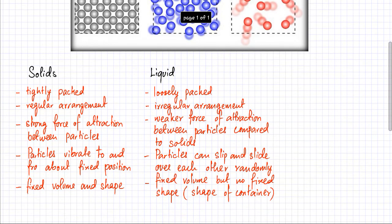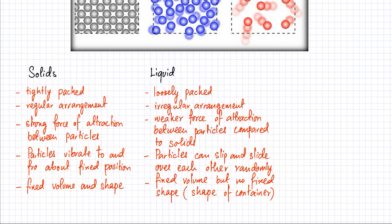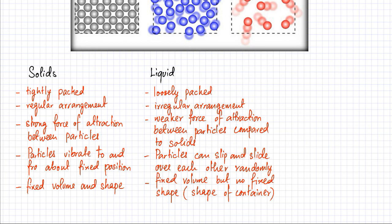Liquids have a fixed volume. So if you buy a one-litre bottle of water, it's going to remain one litre of water. But the shape is not fixed — if you put water in a glass, the shape changes to match the container. So the shape is always of the container, but the volume is still fixed. Liquids are also not very compressible; they have tiny gaps so they might be compressed very slightly, but not significantly.